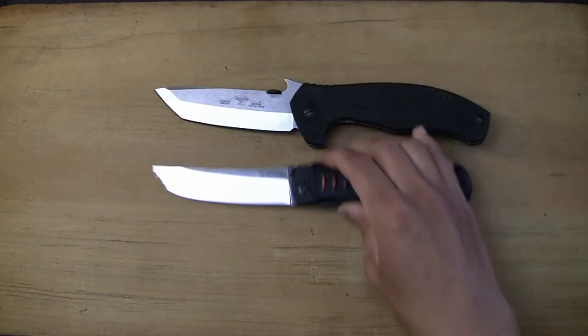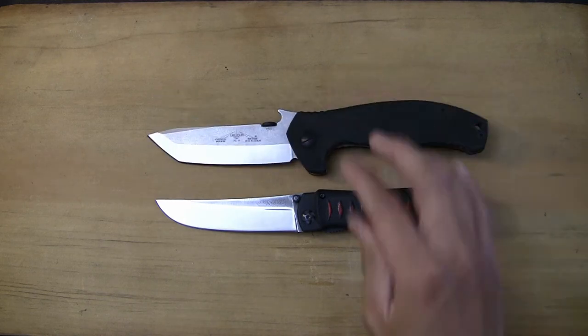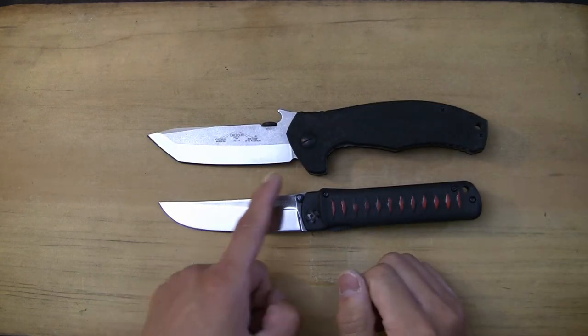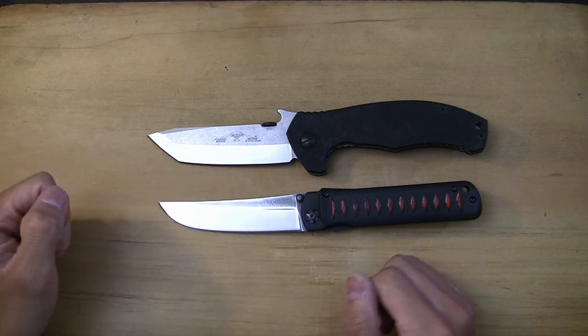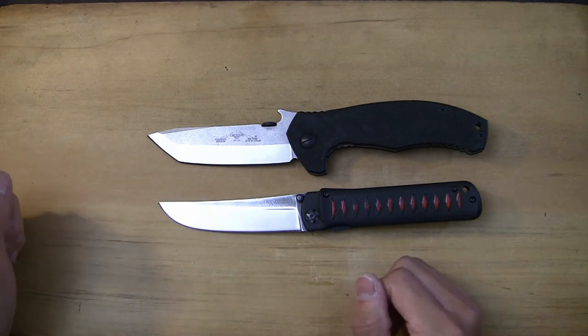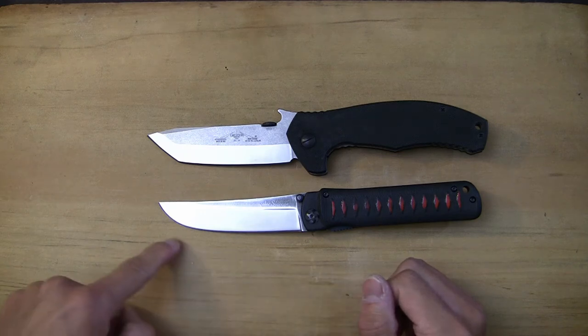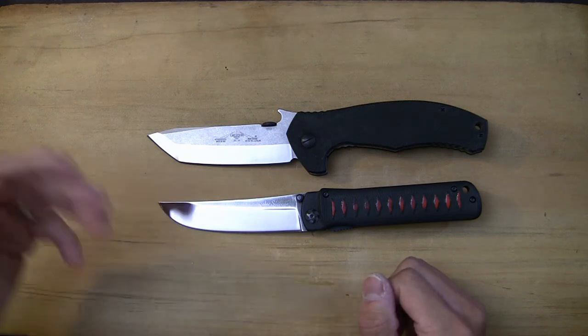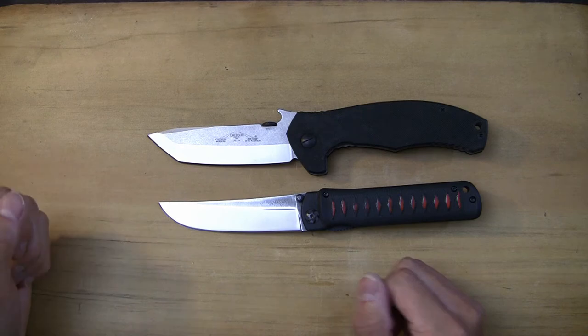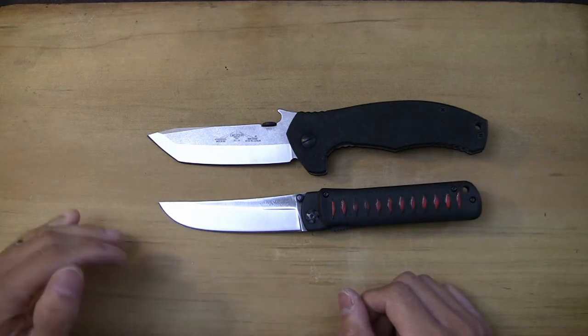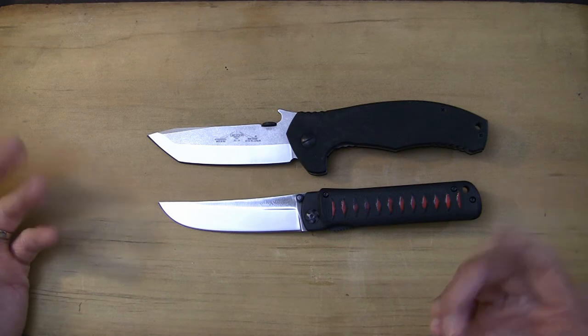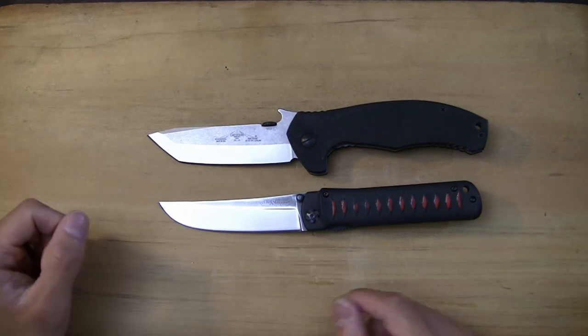So this is an Emerson Roadhouse. You see how the Emerson Roadhouse has a Tanto point, but it has an American Tanto where it's a very abrupt secondary point. Whereas Japanese Tantos tend to be a little bit more subdued and more flowing in terms of having a nice trailing point on there.